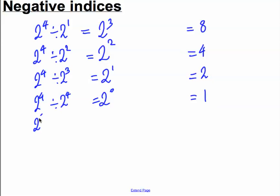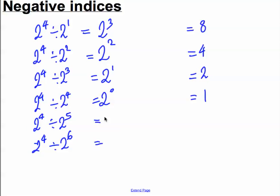Now I want to pose two more questions: 2 to the power of 4 divided by 2 to the power of 5, and 2 to the power of 4 divided by 2 to the power of 6 — and ask you what do you think those are equal to. Well, on the one hand we can still use our division rule for indices. 2 to the power of 4 divided by 2 to the power of 5 is 2 to the power of 4 subtract 5, which is minus 1. And 2 to the power of 4 divided by 2 to the power of 6 is 2 to the power of 4 subtract 6, which is minus 2. So what are 2 to the minus 1 and 2 to the minus 2 equal to?